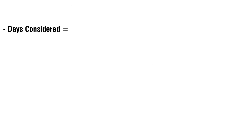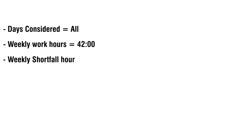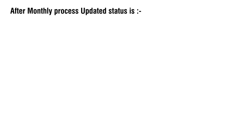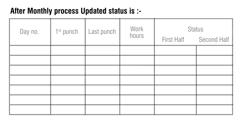Day is considered all. Weekly work hours: 42. Weekly shortfall hours: 9. Number of half days to be deducted: 3. After monthly process, updated status shows 3 half days marked accordingly based on the shortfall calculation.